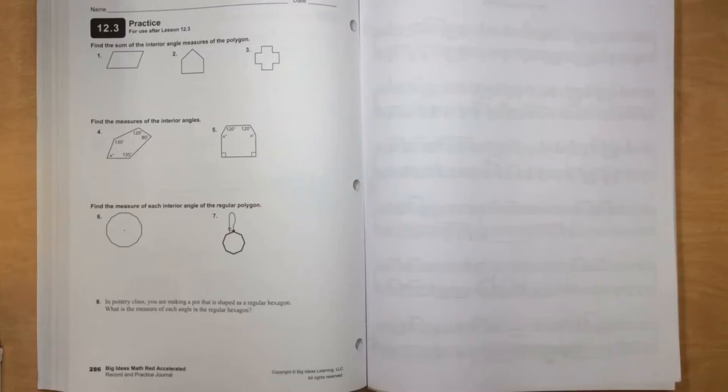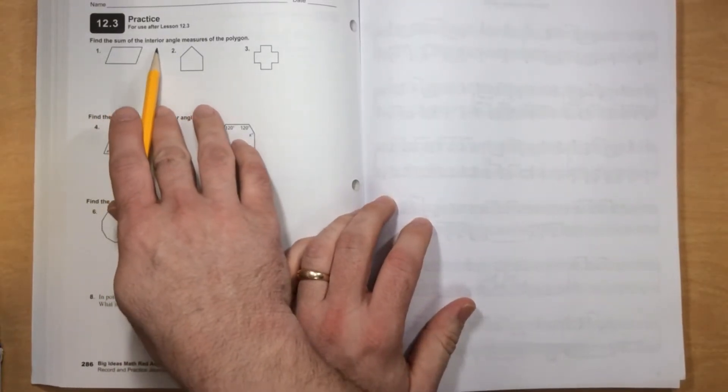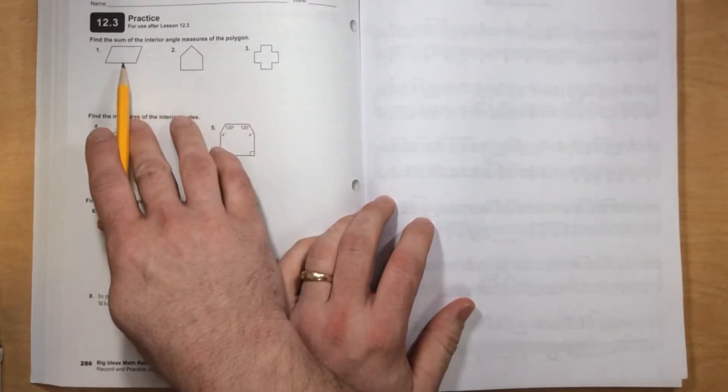Hey, this is lesson 12.3, journal page 286. It says find the sum of the interior angle measures of the polygon.